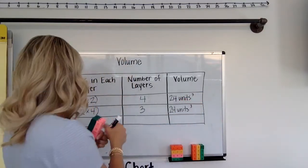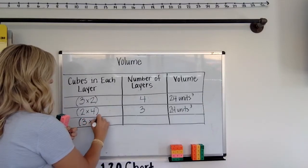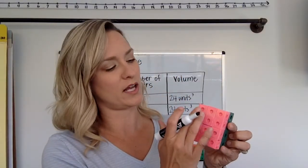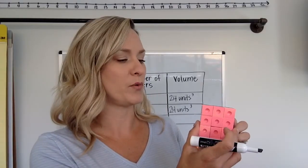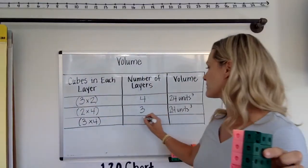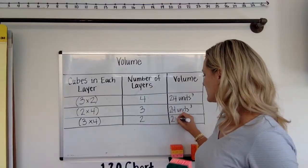This time if we look at it, we have a 3 by 4 - 1, 2, 3, 4 - so a 3 by 4. I'm gonna put that here. Then we have to tell how many layers it has. We know that 3 times 4 is 12, and we have two layers. That should check out because 12 times 2 is still 24 units cubed.